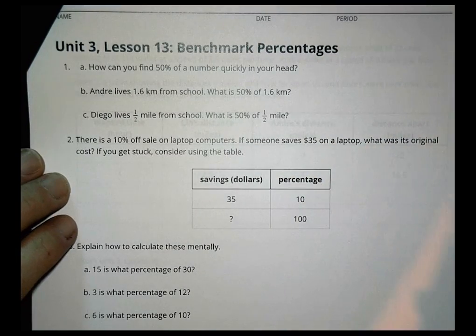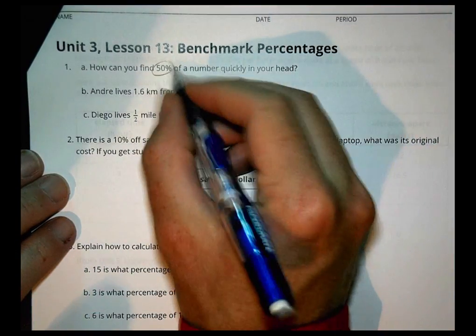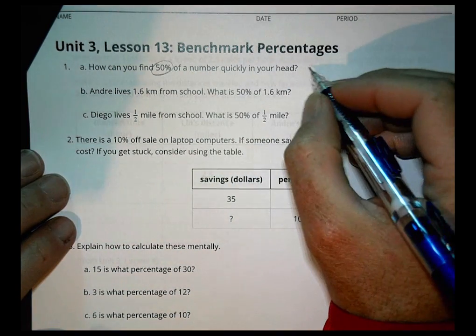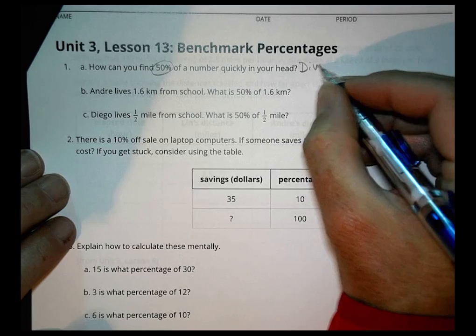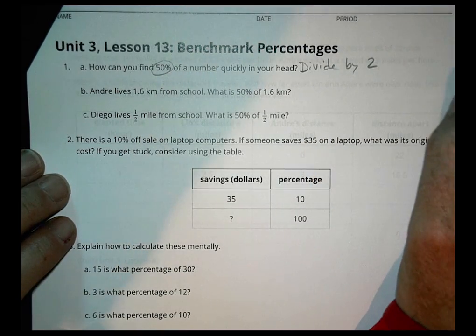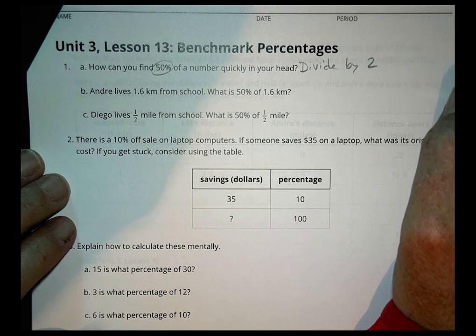All right. Homework. How can you find 50% of a number quickly in your head? Well, hopefully you have the idea here. You wrote something like divide by 2. 50% of a number is dividing it by 2.